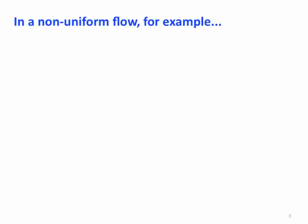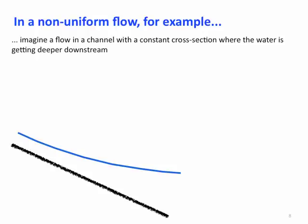Now, in a non-uniform flow, let's imagine flow in a channel that has a constant cross-section, but the water is getting deeper as you go downstream. Since q is fixed, the velocity must also be decreasing going downstream. If the water gets deeper, the velocity must be decreasing.